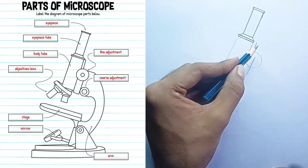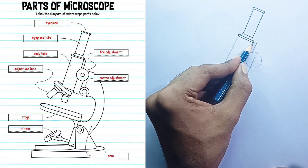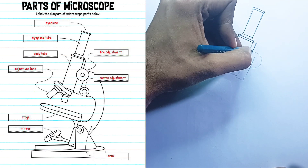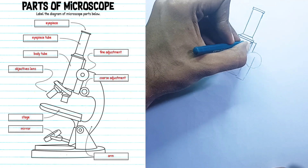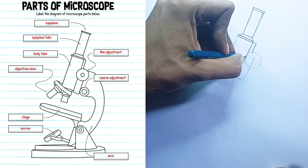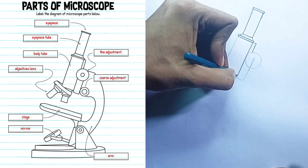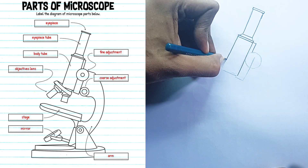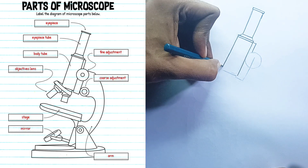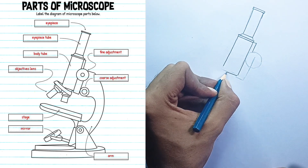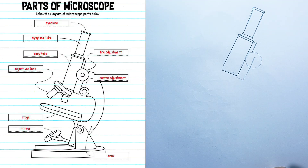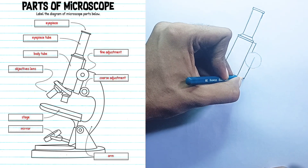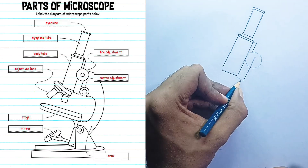Fine adjustment: this is a small, typically inner knob used for making precise, minute adjustments to the focus. It's especially crucial when using high-power objective lenses, e.g. 40x or 100x, to achieve a sharp, clear image, as even a slight movement can blur the view.